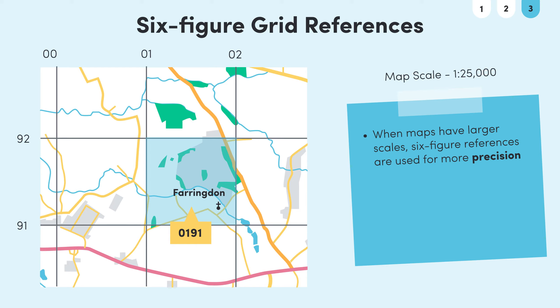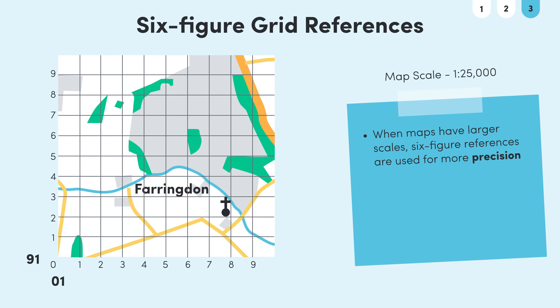The way we figure out a six figure grid reference is to mentally divide our cell of interest — in this case the cell defined by the four figure grid reference 0191 — into a 10 by 10 grid. If we use our imagination to zoom in on the cell, we can see these smaller divisions. When finding a six figure grid reference, we're looking for the closest intersection of these smaller grid lines to our point of interest. In this case, the church is found closest to this point here.